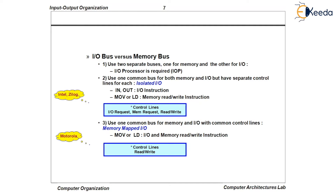So a bus system has to be carefully designed. Now let us understand in how many ways these bus systems can be designed. The first way is a complex way. You know that there are three lines in a bus system: one is the data bus, second is the address bus, and the third is the control bus.